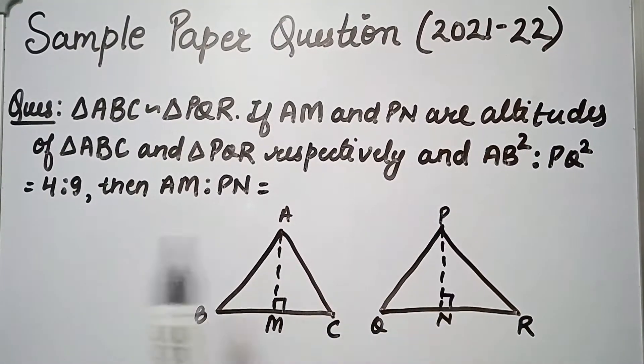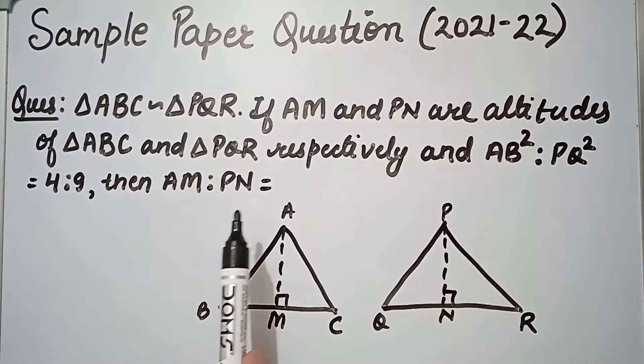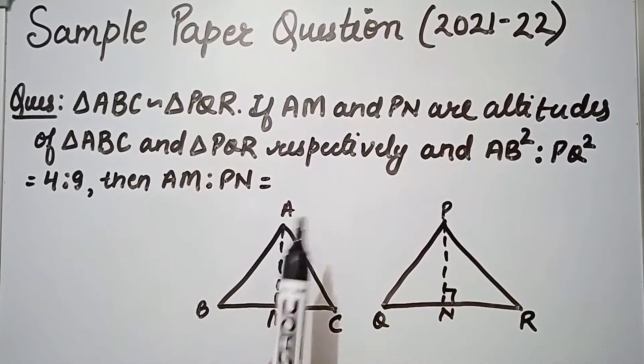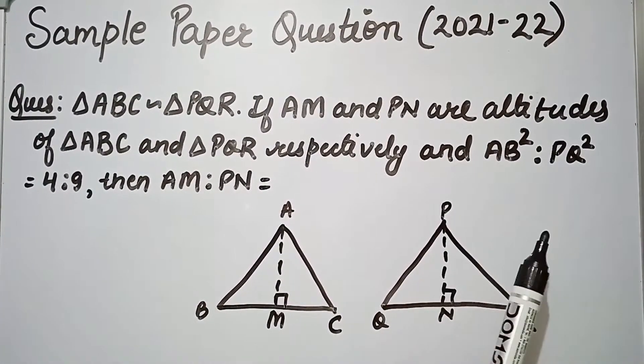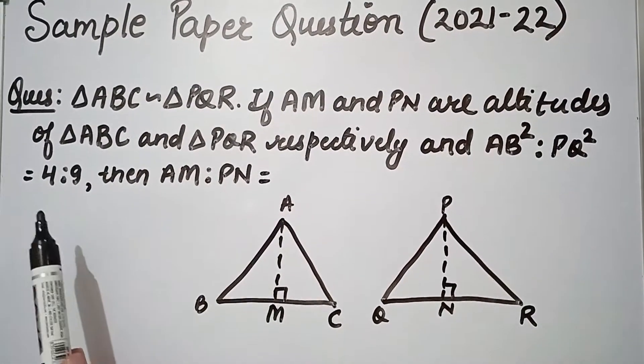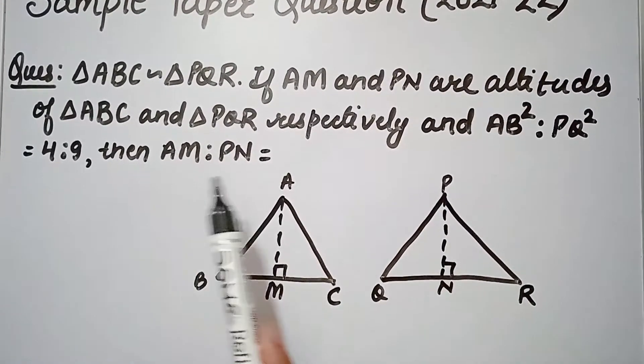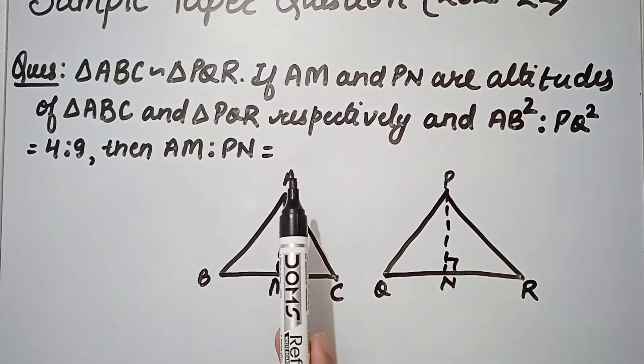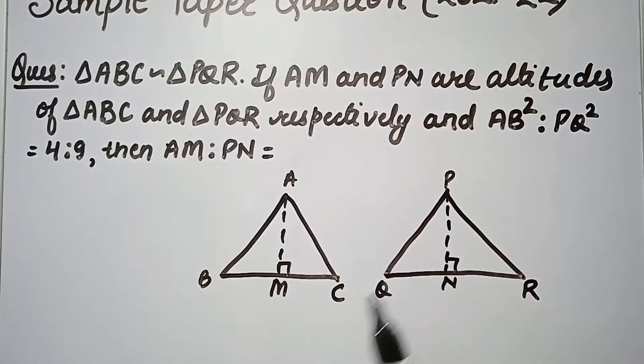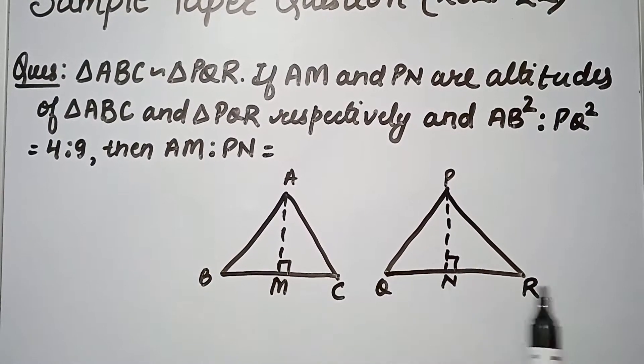of triangle ABC and triangle PQR respectively, and AB square ratio PQ square is equal to 4 ratio 9, then AM ratio PN is equal to? So we have two triangles given: ABC and PQR, and these two triangles are similar. ABC triangle has altitude AM and PQR triangle has altitude PN.